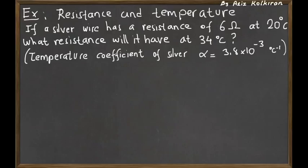We know that the resistance of a resistor changes with temperature. Let's see how this change happens for a specific example. We have a silver wire which has a resistance of 6 ohms at 20 degrees Celsius.